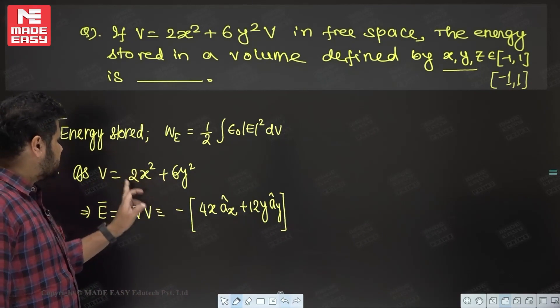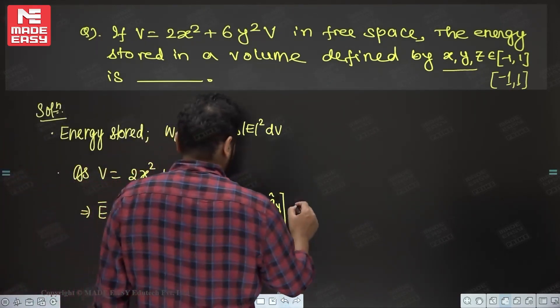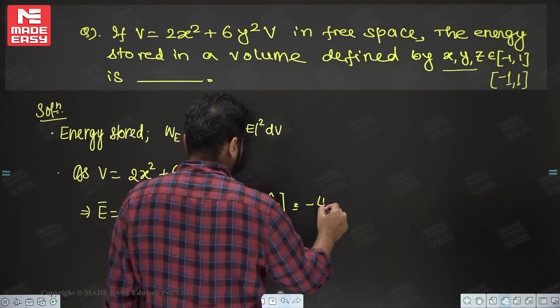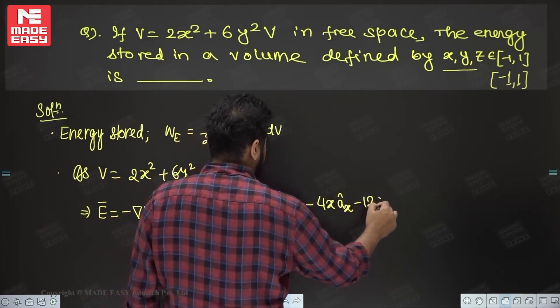You have to differentiate with respect to x and then with respect to y. Therefore, I am going to get minus 4xAx minus 12yAy.